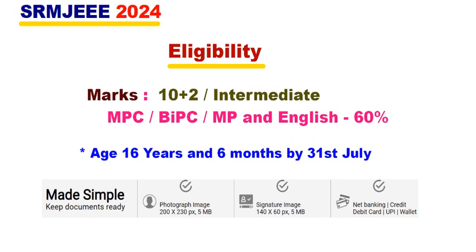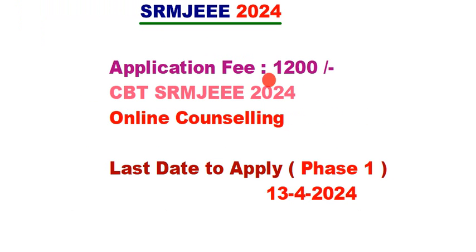You must be 16 years and 6 months complete to satisfy the eligibility conditions. You will need a passport-size photograph of 200x230 pixels up to 5MB, a signature of 140x60 pixels up to 5MB, and your 10th class mark list with roll number. The application fee is ₹1,200.